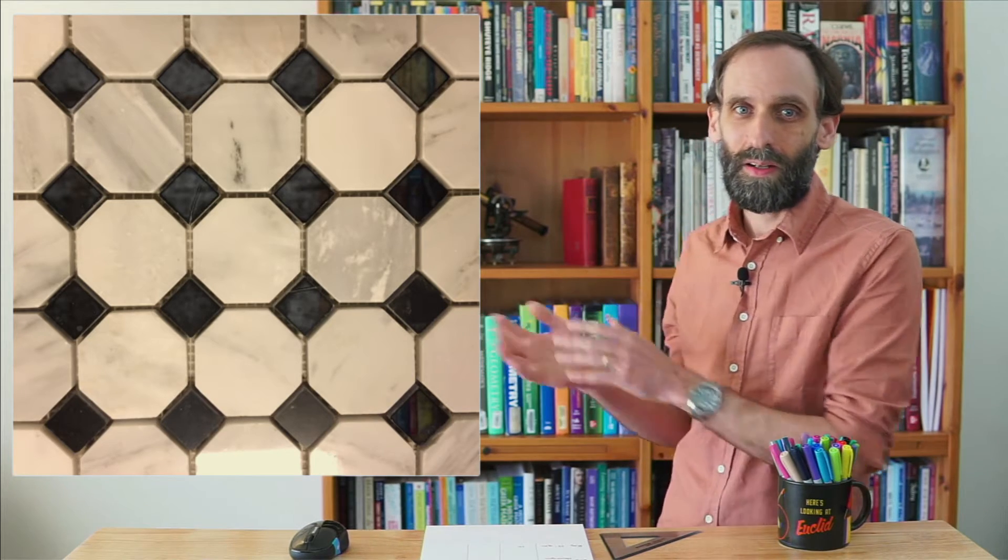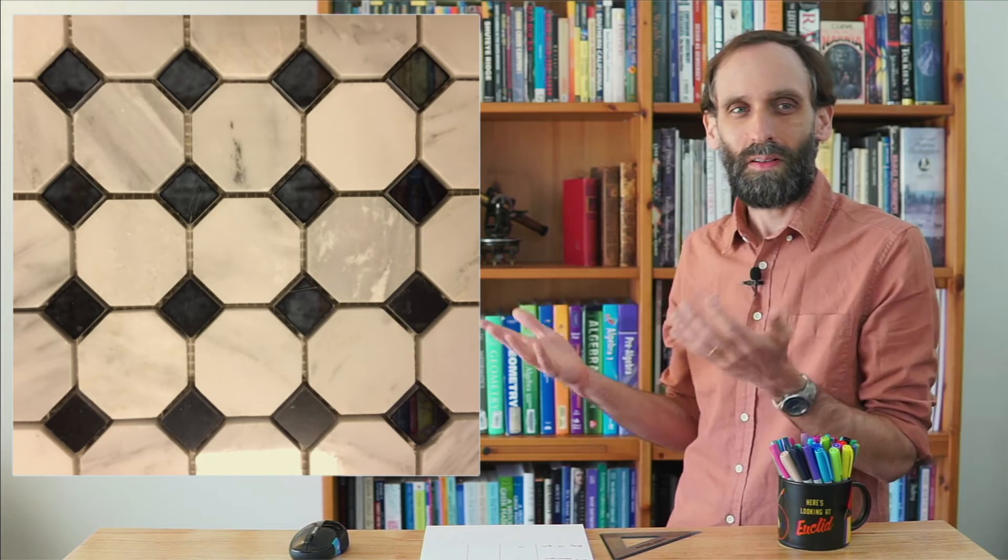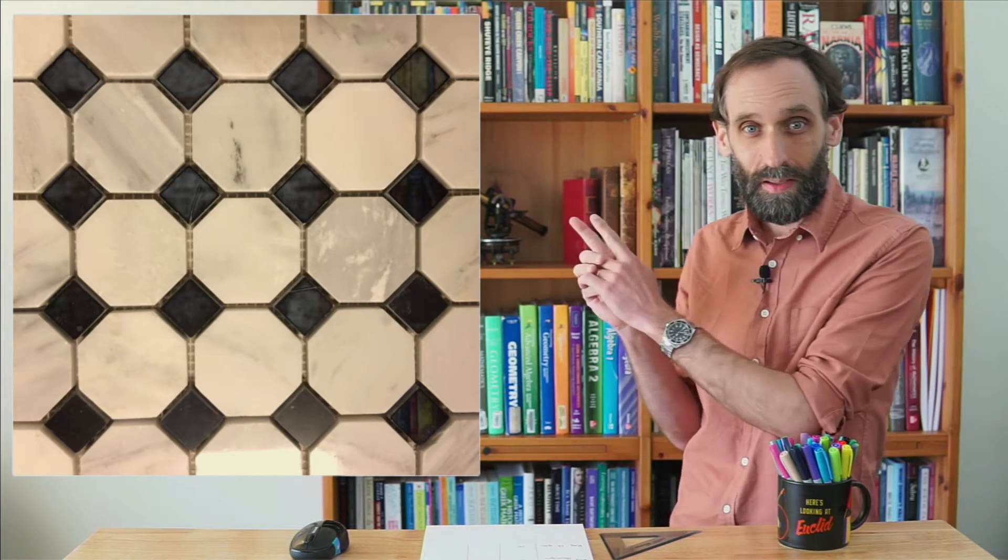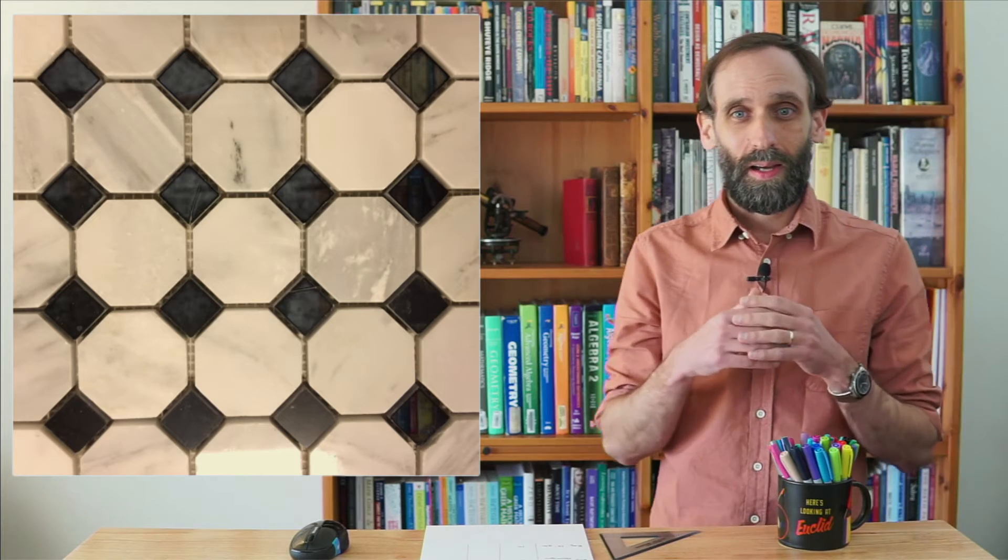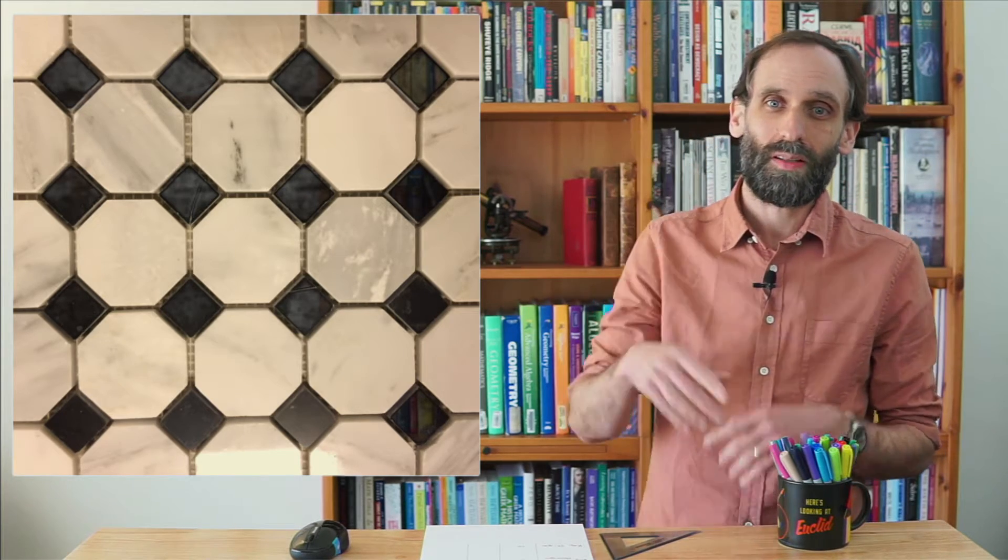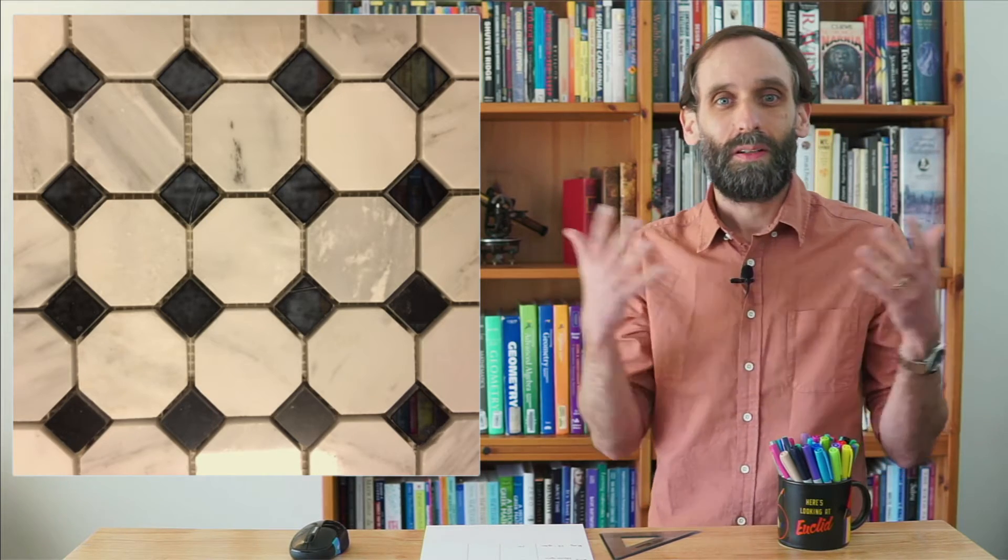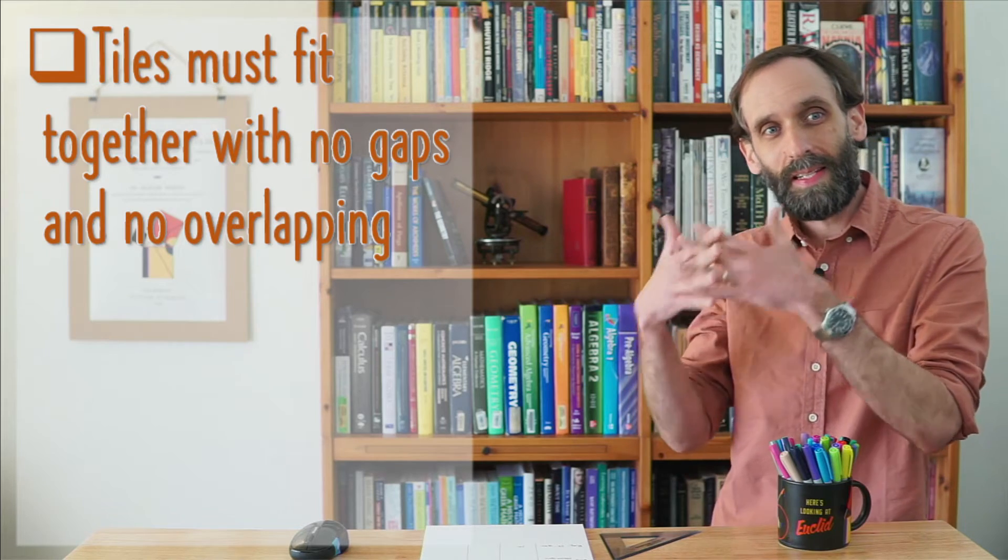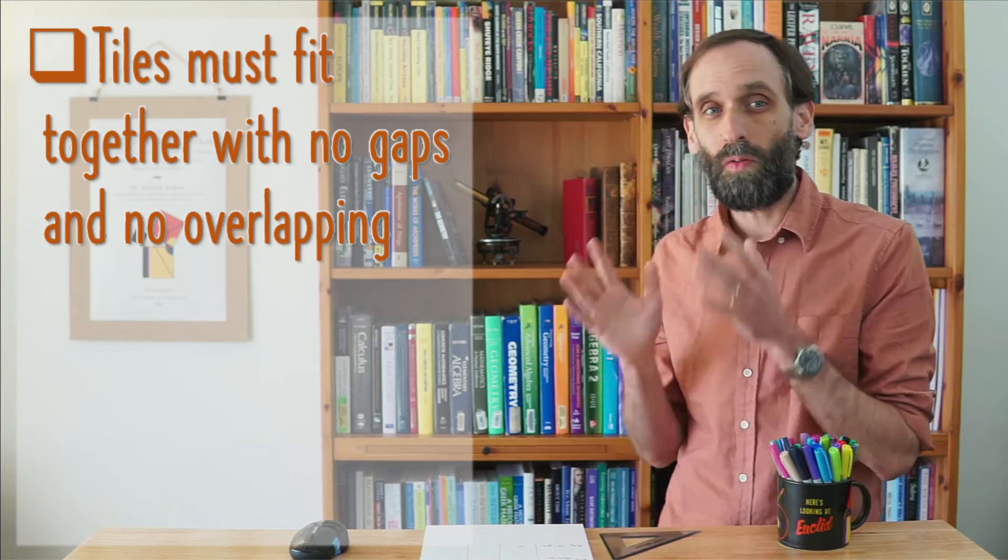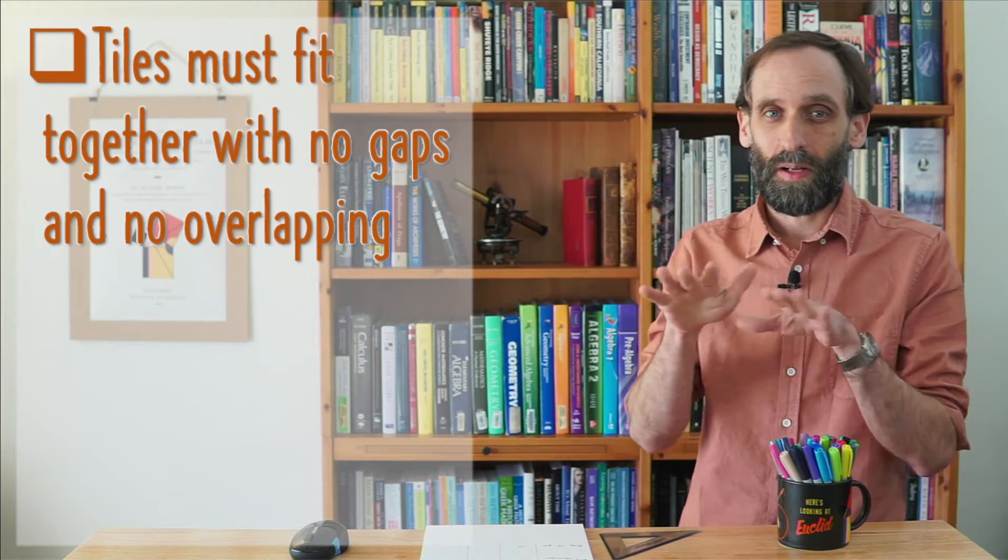An example of this right here is this tiling, which I've seen in bathrooms of quite a few older houses. This tiling is made of squares and regular octagons, and this demonstrates the two conditions that must be met for a shape or set of multiple shapes together to tile. The first condition is this: all the tiles must fit together with no gaps and no overlapping. We don't want any spaces or gaps and we don't want the tiles to overlap on top of each other.